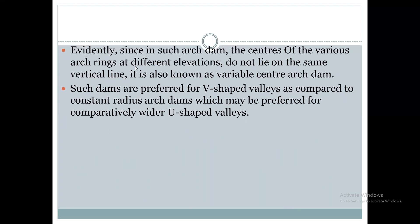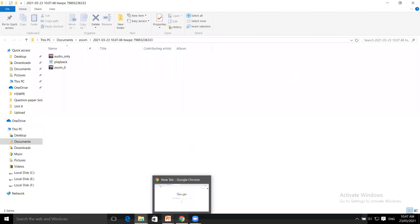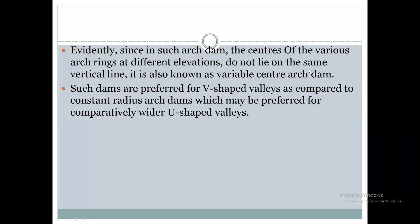The centers of various arch rings at different elevations do not lie on the same vertical line. In a constant radius arch dam, the centers lie on the same vertical line, but in a variable center arch dam they lie at different elevations along different positions. Therefore this type is called a variable center arch dam.